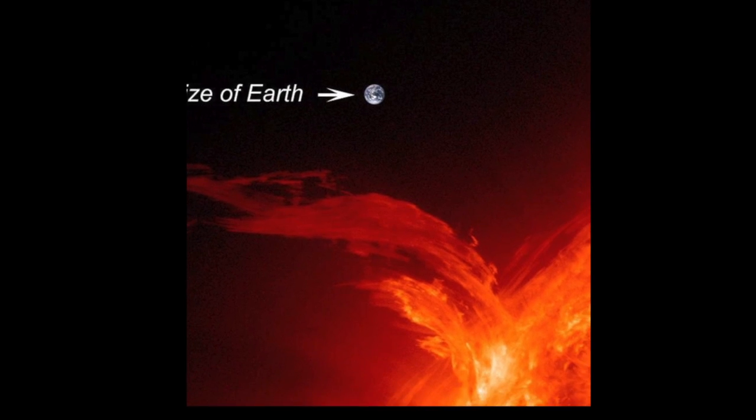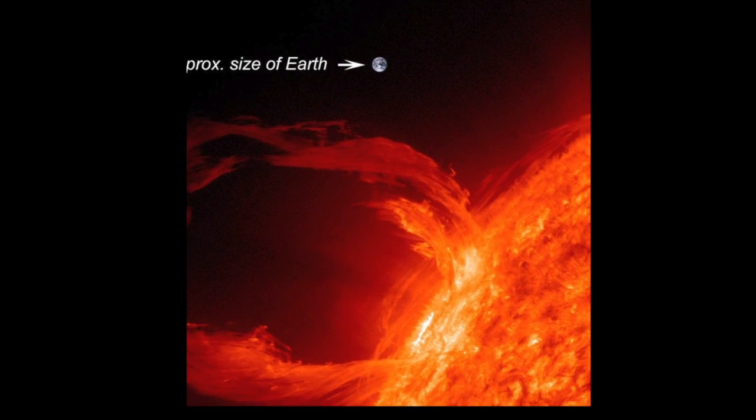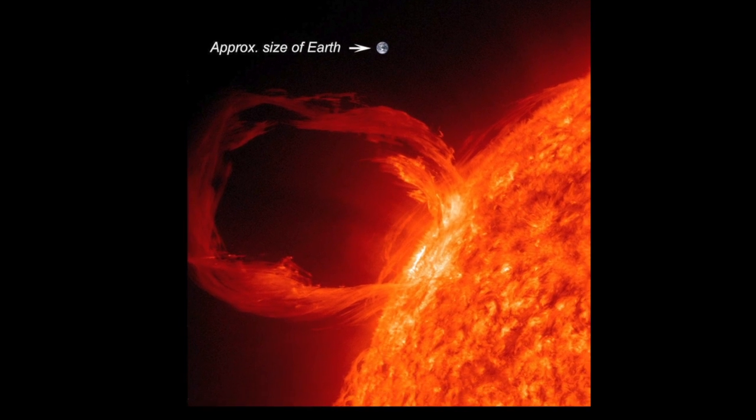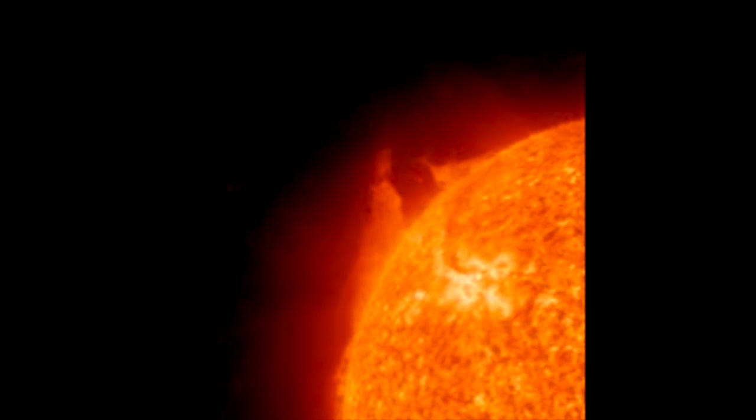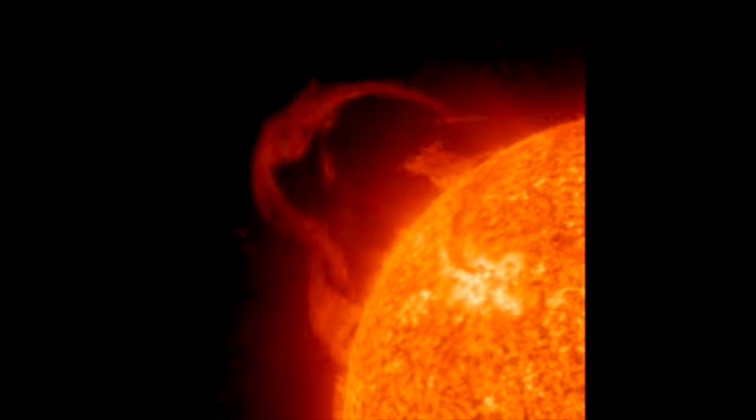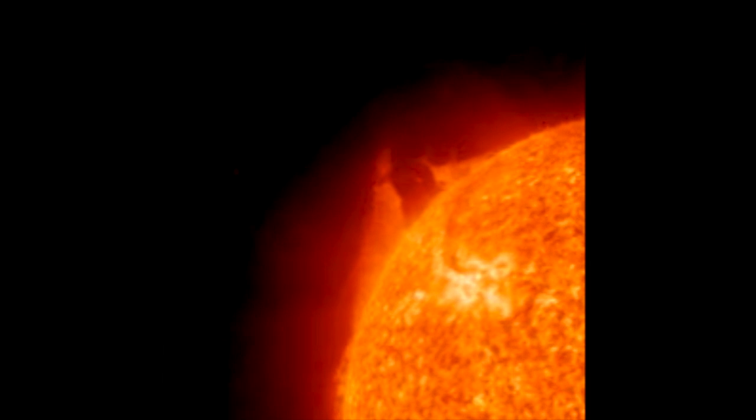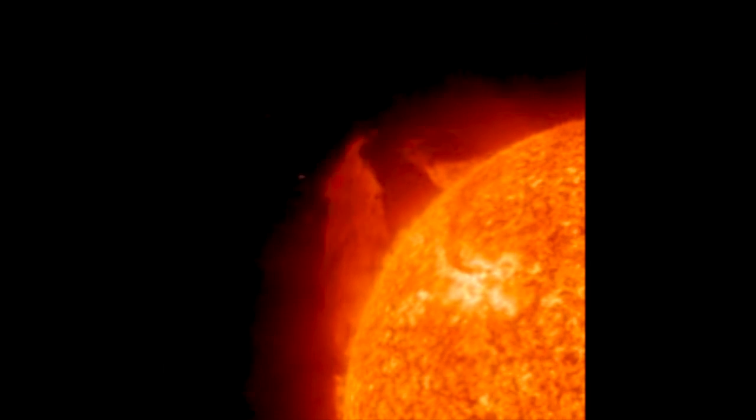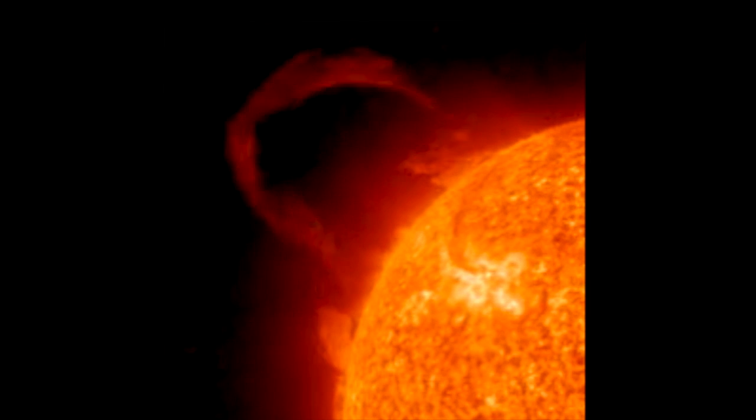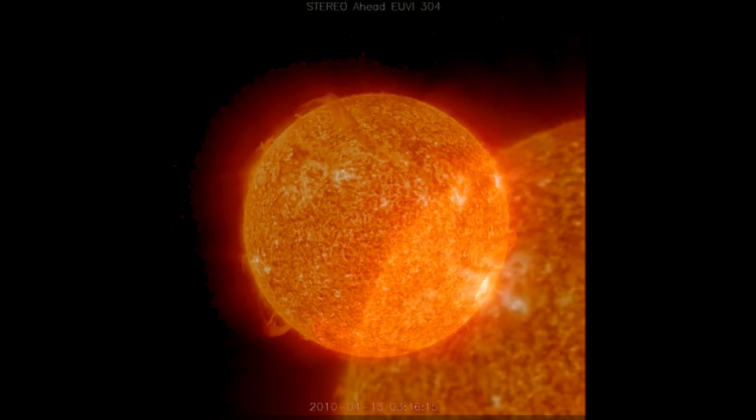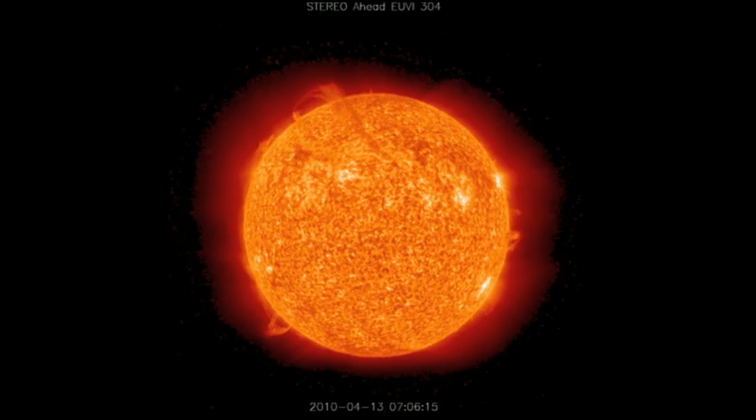Scientists are still researching how and why prominences are formed. The red glowing looped material is called plasma, a hot gas comprised of electrically charged hydrogen and helium. The prominence plasma flows along a tangled and twisted structure of magnetic fields generated by the sun's internal dynamo.